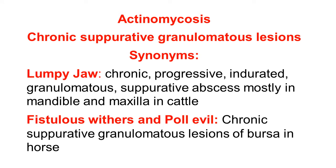Actinomycosis produces various types of infection. The common infection type is a chronic — meaning long duration — suppurative, with pus formation, and granulomatous lesions, just like a granuloma or tumor. We will now see the synonyms.